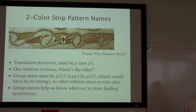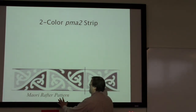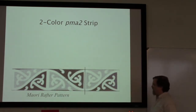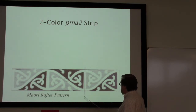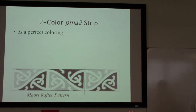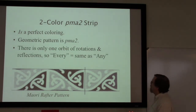Knowing something about how group names work can help us know when we're looking for certain kinds of symmetries and when we've found them all. Let's look at another example — a Maori rafter pattern. The overall design is pma2; hopefully you see the mountain-valley-mountain shape indicative of the glide reflection. This is going to be a perfect coloring. We'll go through and look at every single one of the symmetries and make sure we've categorized whether they're reversing or preserving so we know there aren't any mixing ones.